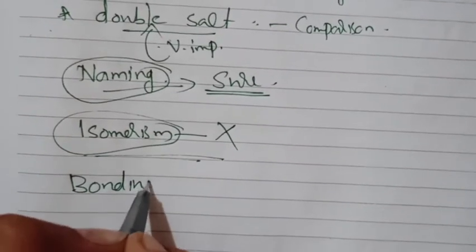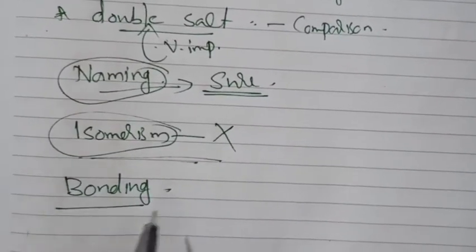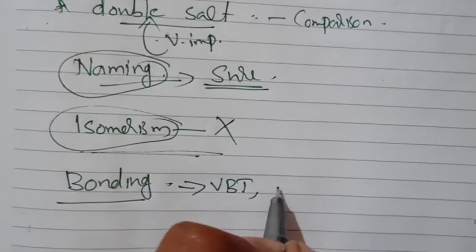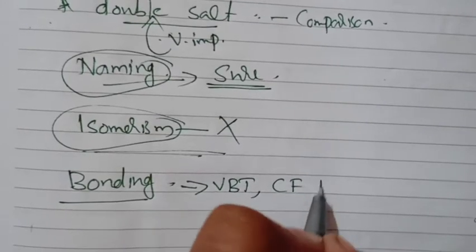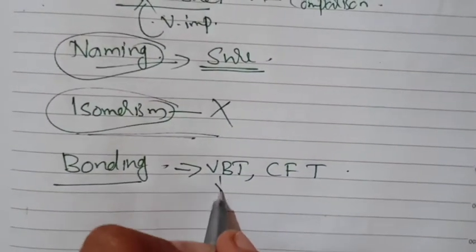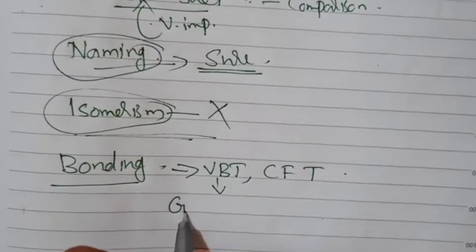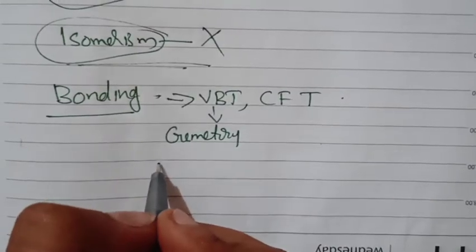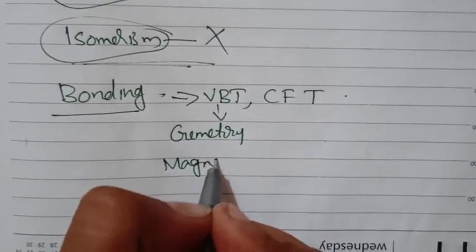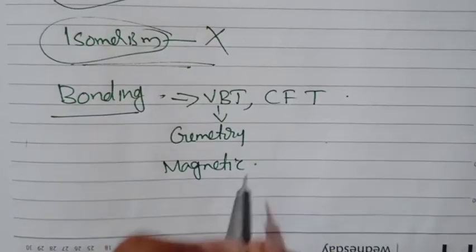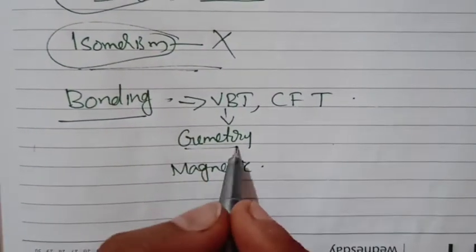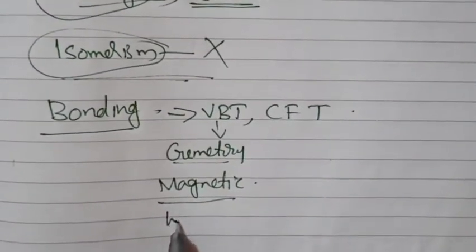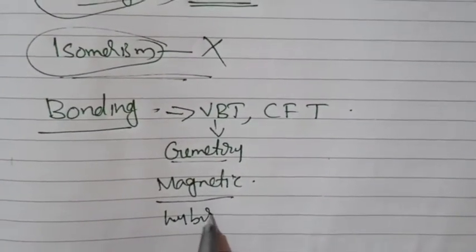The next important session covers bonding in coordination compounds. There are two main theories. The first is Valence Bond Theory, which helps to predict the geometry, the magnetic character — whether a compound is paramagnetic or diamagnetic — and also the hybridization of a given coordination compound.